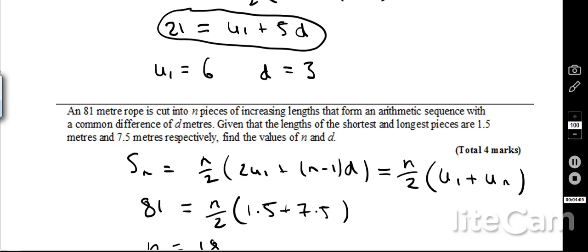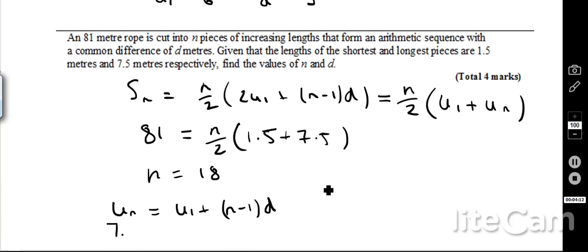First term, the first bit was 1.5, that was the shortest bit, the longest bit was 7.5, and then just using that, I can therefore find out what n is equal to, so n is equal to 18.